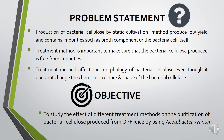What is the problem statement? The production of bacterial cellulose by static cultivation method produces low yield and it contains impurities such as broth components or the bacteria cells themselves. Treatment method is important to ensure that the bacterial cellulose produced is free from any impurities. The treatment method affects the morphology of bacterial cellulose, even though it does not change the chemical structure. The objective of this study is to study the effect of different treatment methods on the purification of bacterial cellulose produced from OPF juice by Azotobacter xylinum.